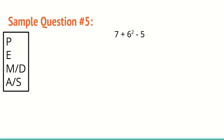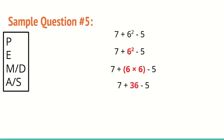Now let's look at a problem with exponents: 7 plus 6 squared minus 5. No parentheses, but we do have an exponent, so we start there. 6 squared means 6 times 6, which is 36. So we have 7 plus 36 minus 5. No more parentheses, exponents, or multiplication or division — so we do addition and subtraction left to right: 7 plus 36 is 43, then 43 minus 5 is 38.